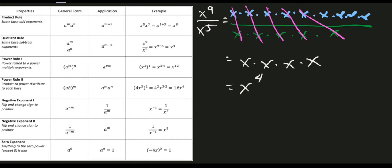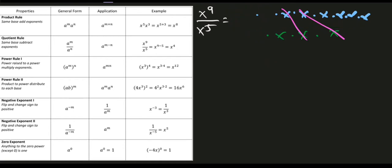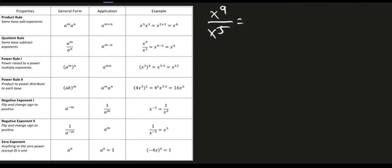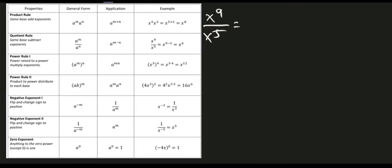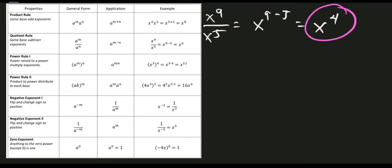Now let's answer using the quotient rule directly. To divide an expression with the same base, copy the base and subtract the exponents: 9 minus 5 equals 4. The answer is x raised to 4. That is the concept of the quotient rule.